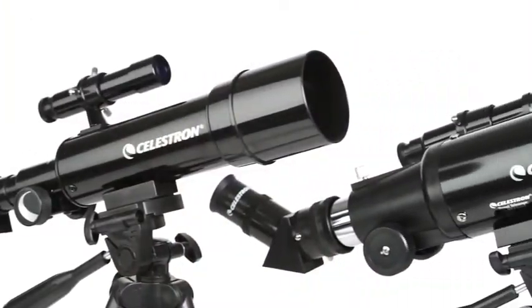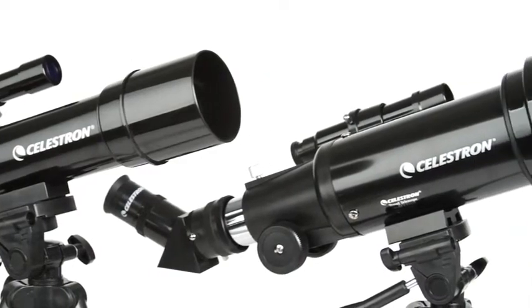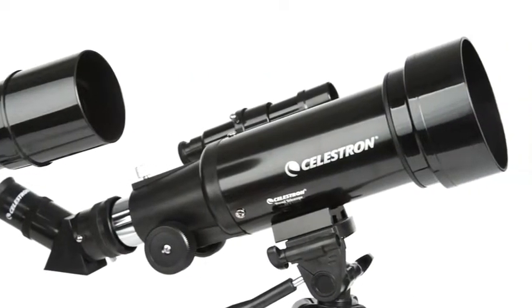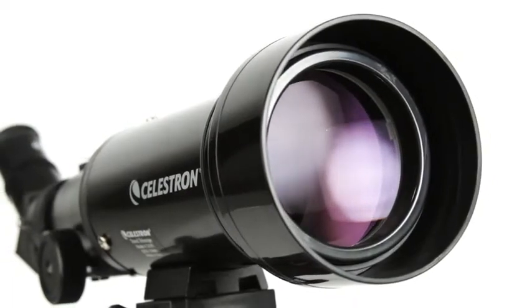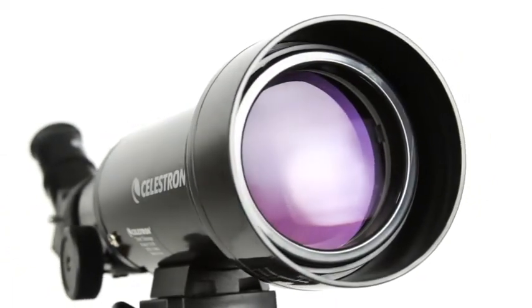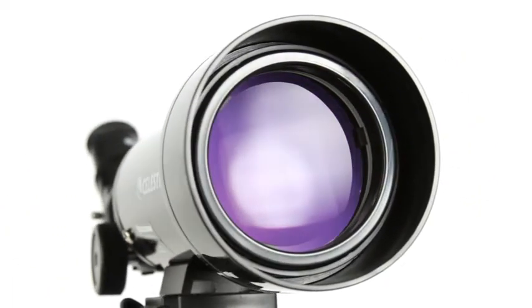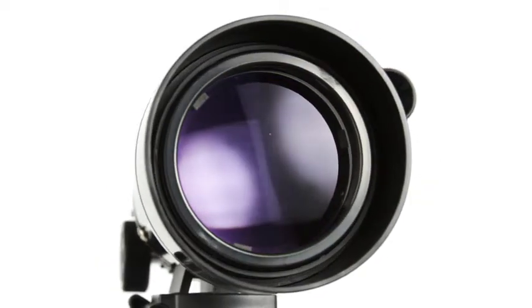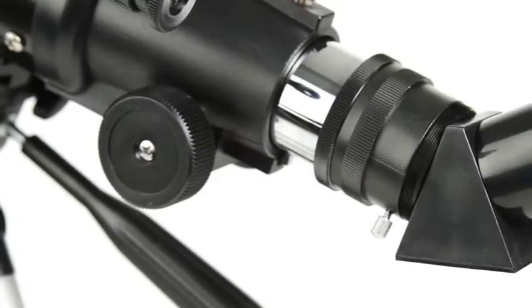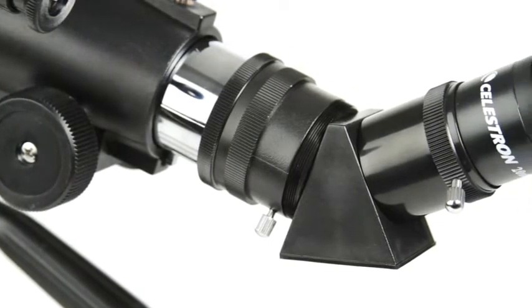TravelScope is a refractor-style telescope with objective lenses ranging from 50 to 70 millimeters. That's enough light-gathering ability to view the rings of Saturn, craters on the Moon, and many more of the brightest celestial objects. An erect image diagonal corrects the orientation of your images.